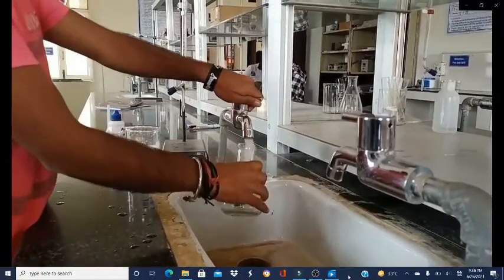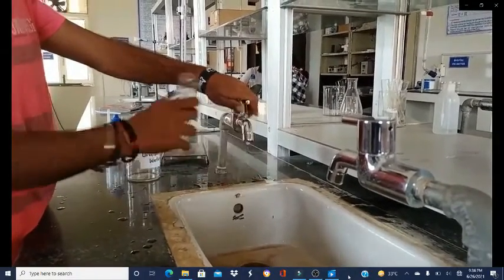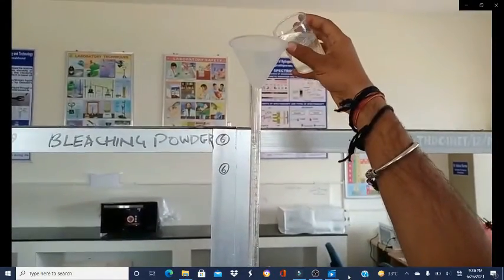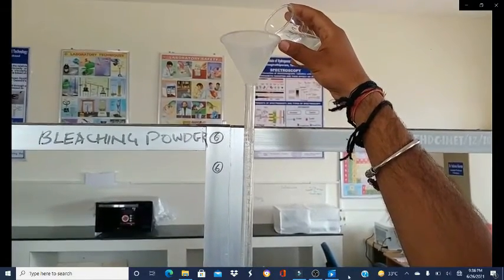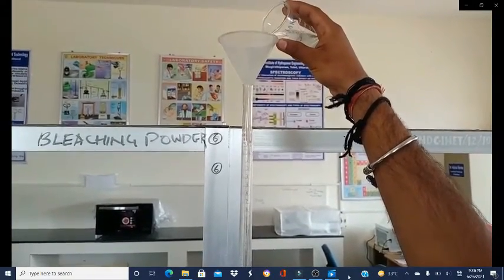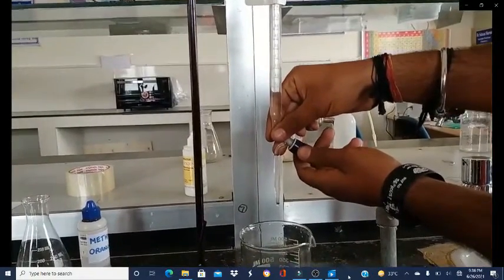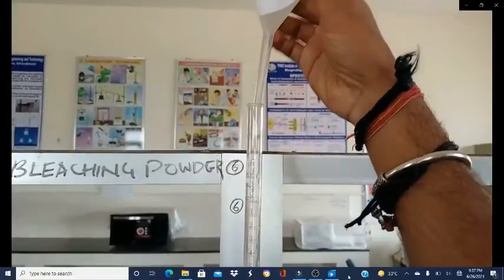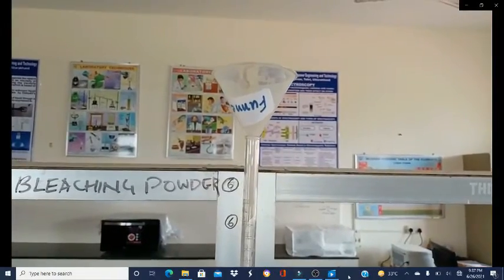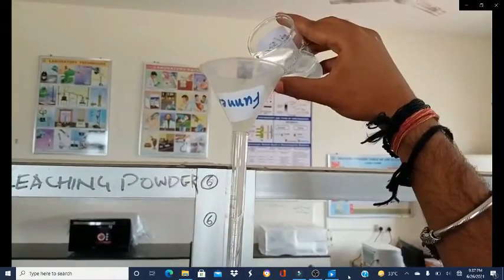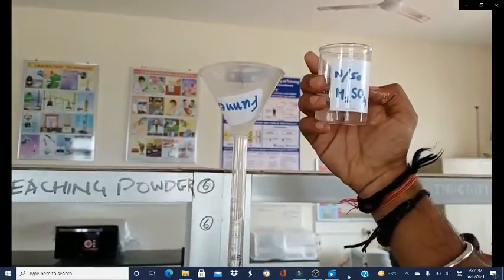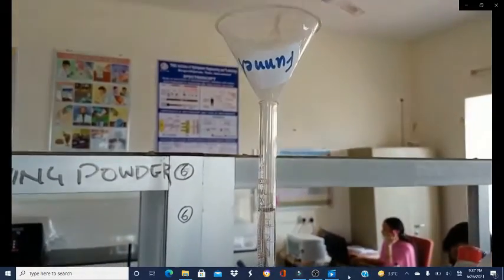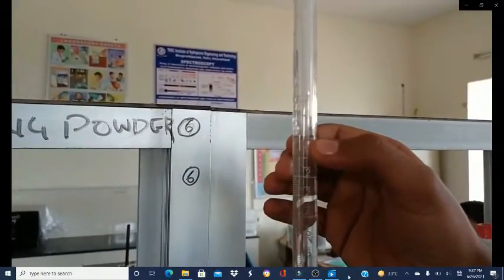These will be washed with tap water, then distilled water, and after washing with distilled water they will be rinsed with the test solutions. First we will rinse the burette with N/50 H₂SO₄ solution, eject the rinsing solution, and then fill the burette again with N/50 H₂SO₄ up to the mark.